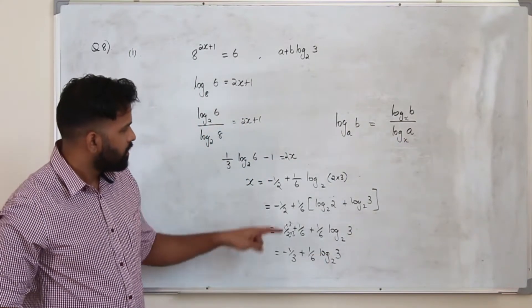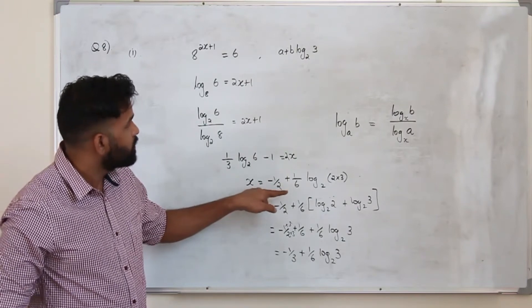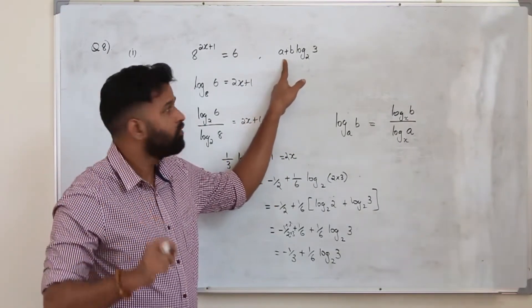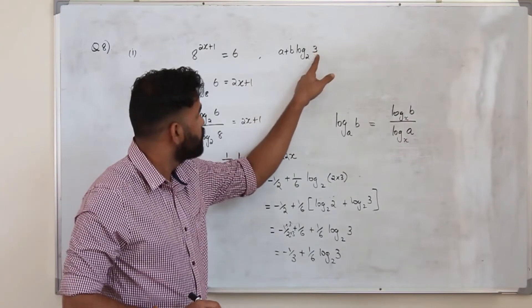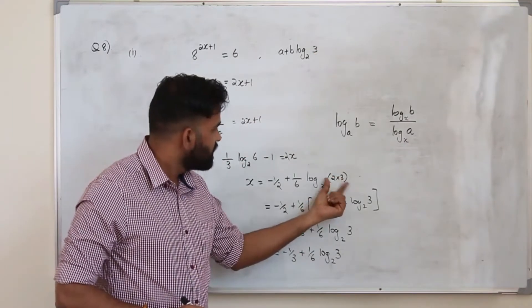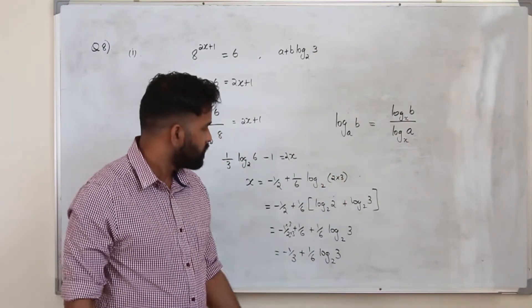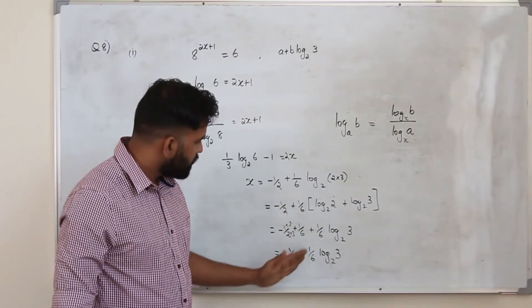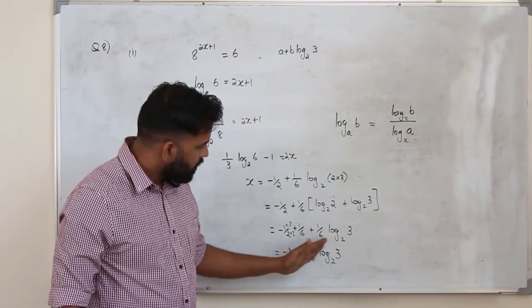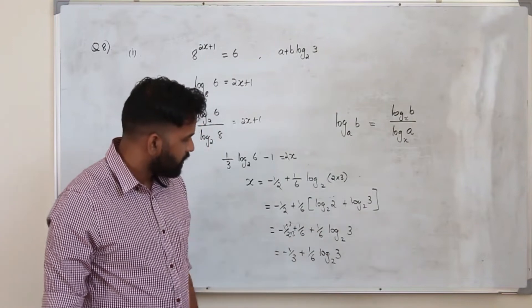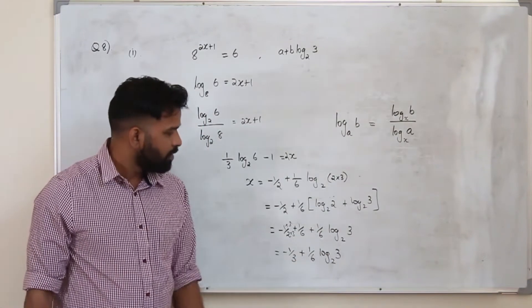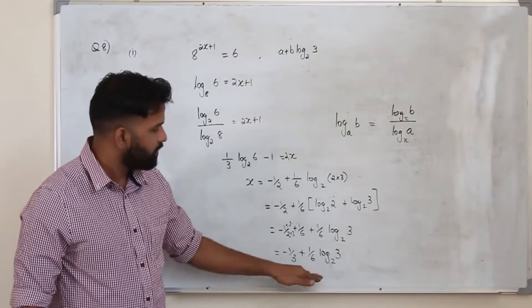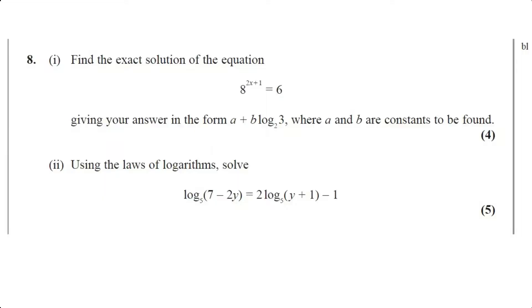That's it. That's why you need to pay attention to the question — read it very carefully. It's not log 6, it's log 3. So you split the 6 into 2 terms, then simplify, putting all the constants together and the logarithmic function separately. The final answer is x equals minus 1 over 3 plus 1 over 6 log 3 to the base 2, which looks exactly like A plus B log 3 to the base 2.